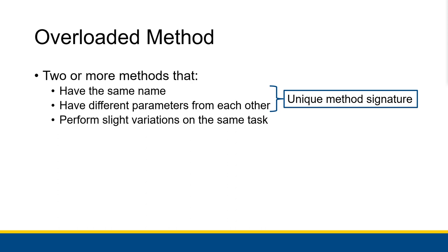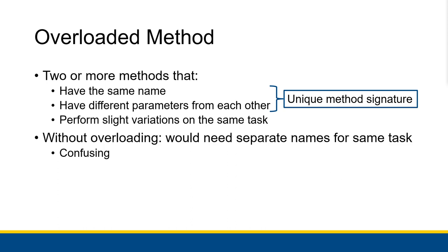When you have unique method signatures for methods sharing the same name, that's what we call an overloaded method. Typically, all of those overloaded methods are trying to accomplish the same task but doing it in slightly different ways based on the information given in the parameters. Without the ability to overload, we would need separate names for the same task, which could be pretty confusing. With overloading, we can have multiple constructors all named 'new', which is helpful because when we see 'new' we know it's a constructor.